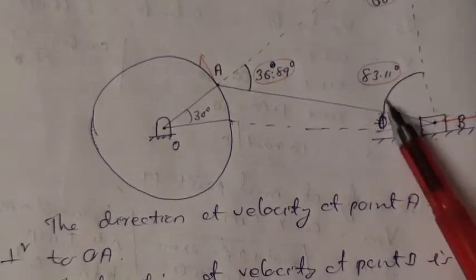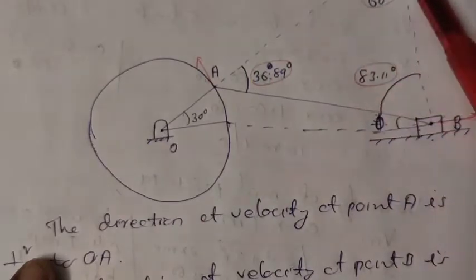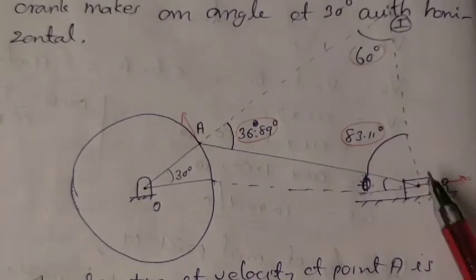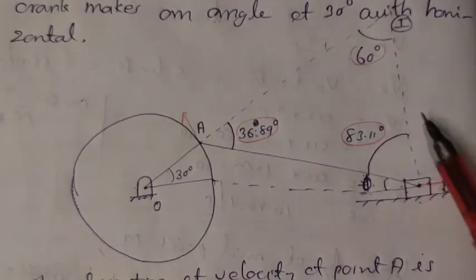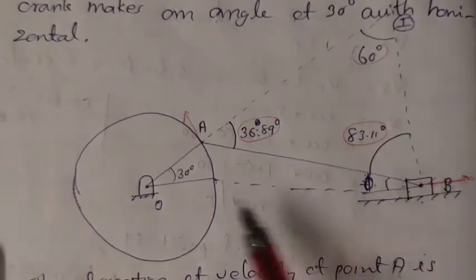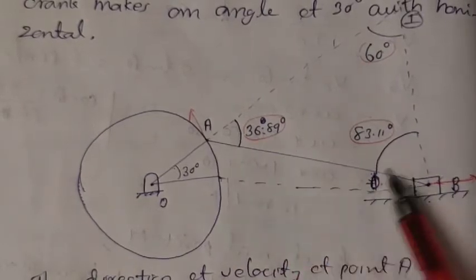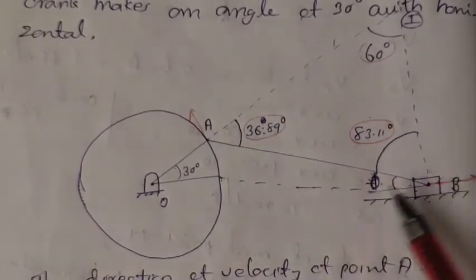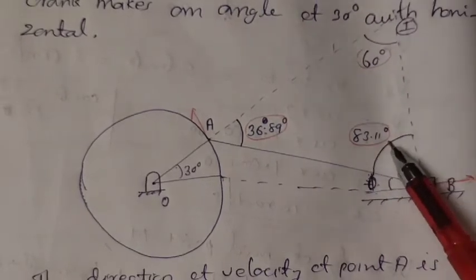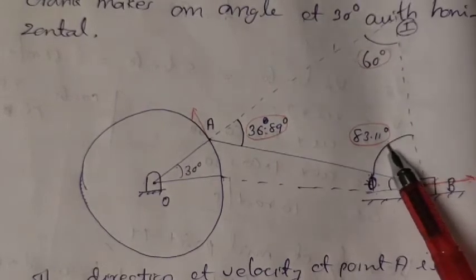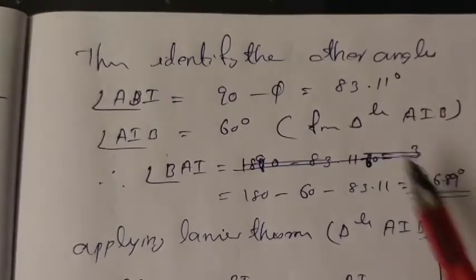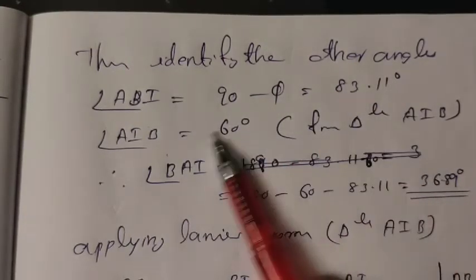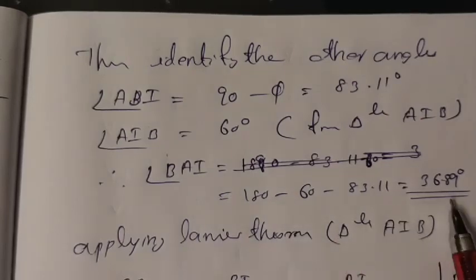With φ approximately 6.89 degrees, the angle 90 minus φ gives 83.11 degrees. Considering triangle OIB, one angle is 30 degrees and another is 90 degrees, so the remaining angle is 60 degrees. Then in triangle AIB, applying the angle sum: 180 minus 60 minus 83.11 gives 36.89 degrees.